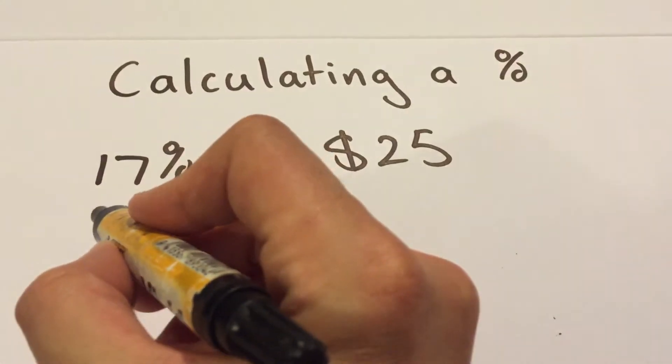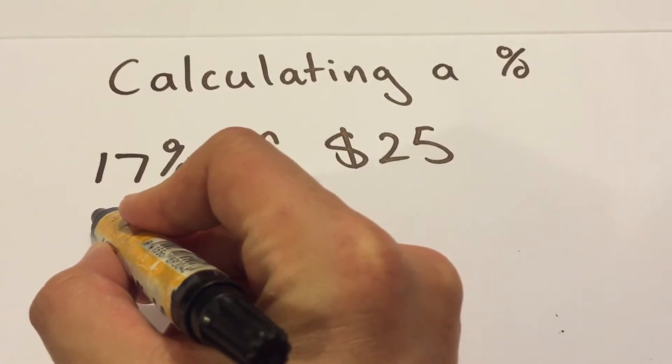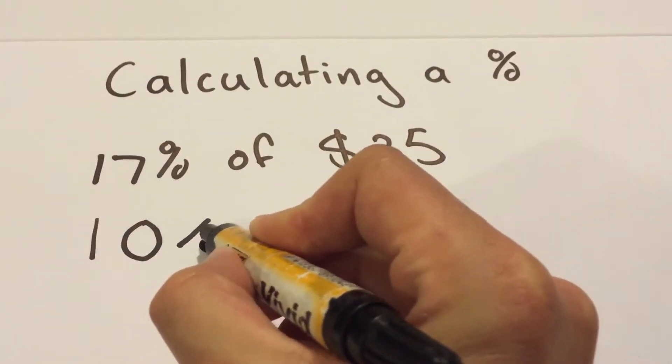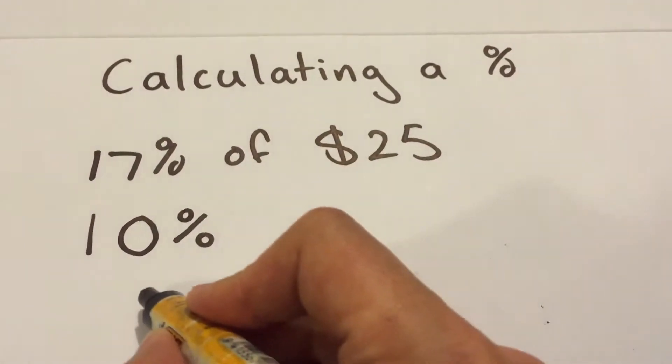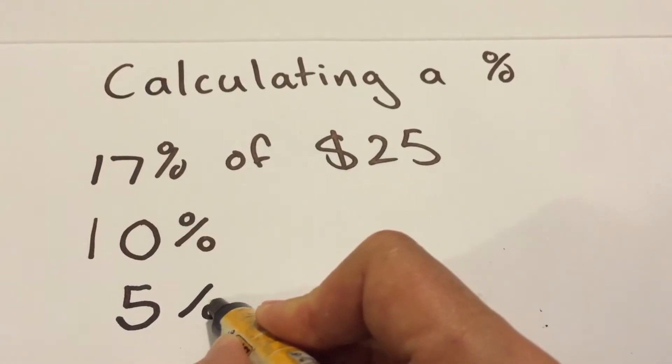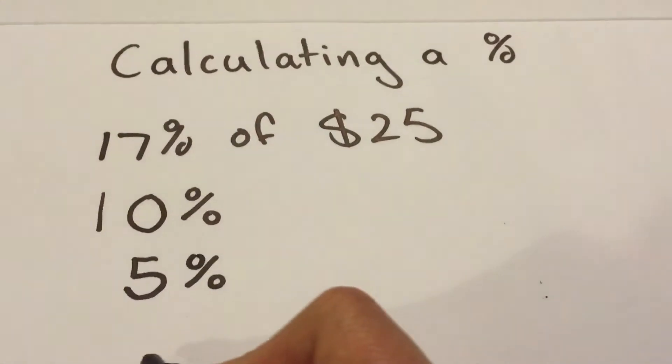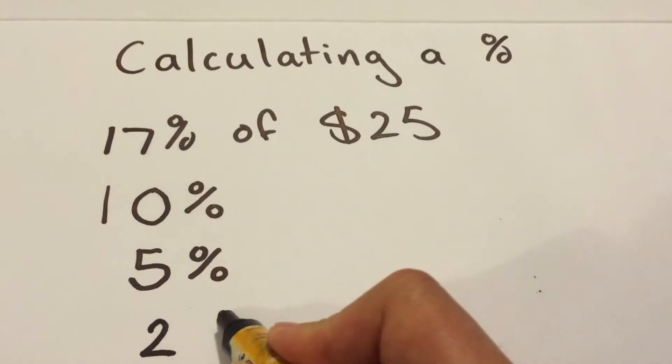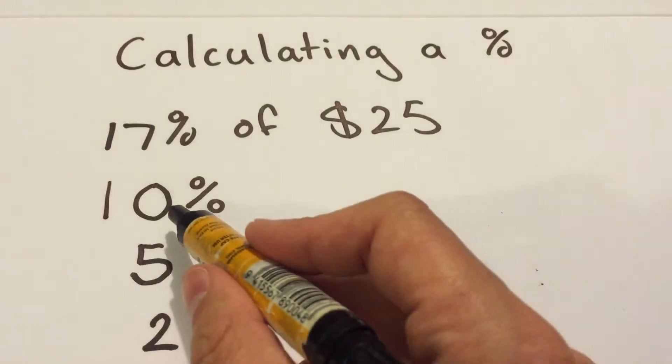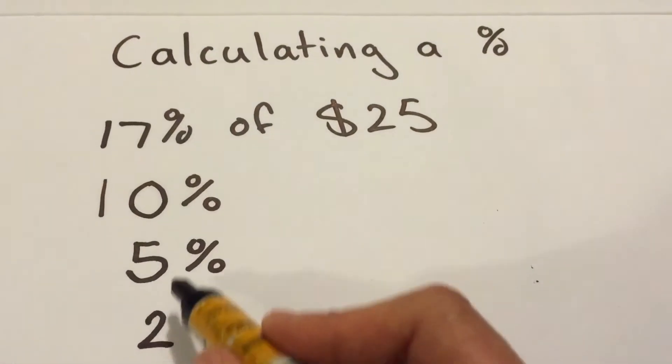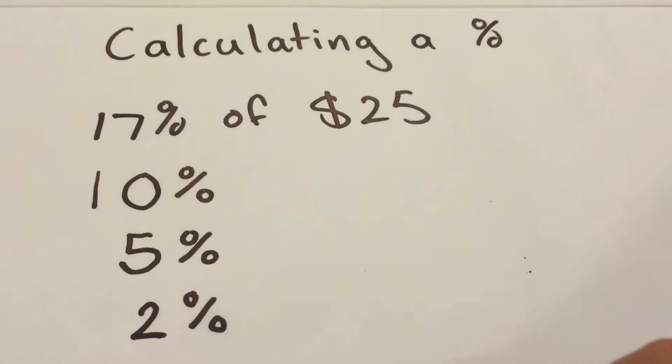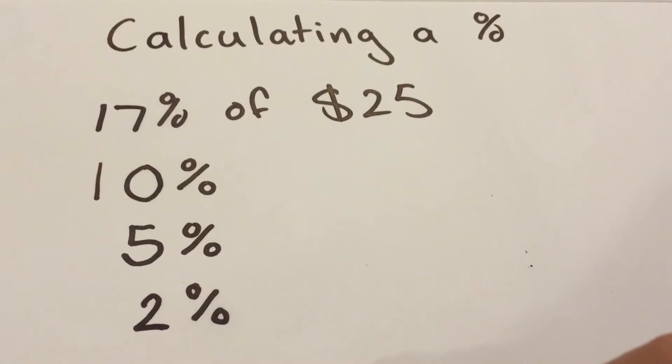You're going to split your 17% into these things: 10%, 5%, and another 2%. The reason I've done that, and you've probably spotted the pattern already, 10 plus 5 plus 2 is 17. So 10%, 5%, 2%, 17%. It's easier just to split it like that, I find.